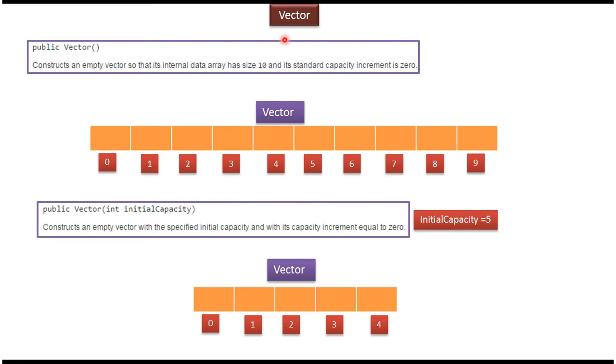Hi, in this video tutorial I will cover vector constructors. This is the first constructor which won't accept any parameter. It is used to construct an empty vector and the initial capacity of the vector will be 10.